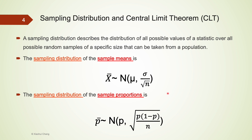The video we just watched only talks about the sampling distribution of the sample mean. In fact, the sampling distribution of the sample proportion also follows a normal distribution using the CLT. The mean of this normal distribution is the same as the population proportion p. And the standard deviation is the square root of the population proportion p multiplied by 1 minus p, divided by the sample size n.